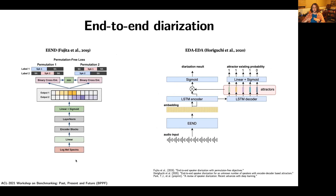More recently, as of Die Hard 3, we've started to see end-to-end diarization make inroads. The winning system for both tracks was still a conventional modular system, but the second-place team — a joint effort between Hopkins and Hitachi — used an end-to-end system based on Hitachi's encoder-decoder-based attractor architecture. Die Hard 3 also saw much more system fusion than previous challenges, which was also an important piece of the Hopkins-Hitachi submission.